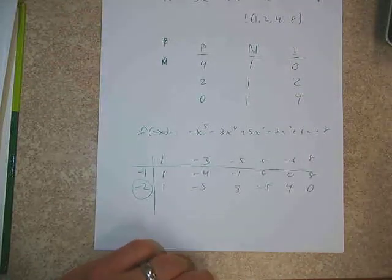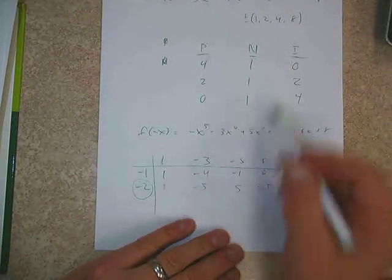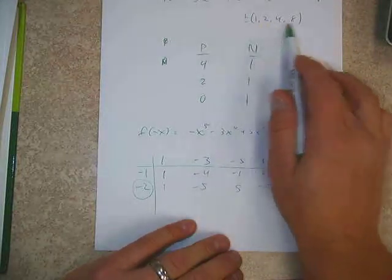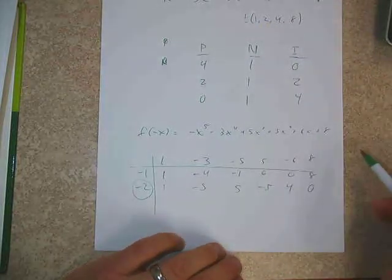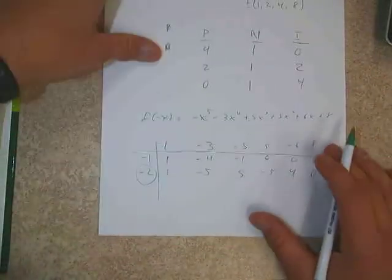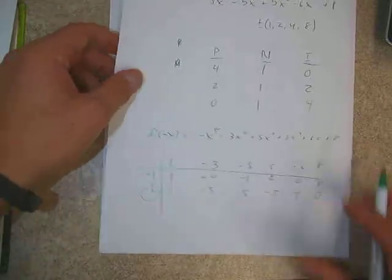Now does that help us know which scenario it is yet? We knew there was going to be one negative root. That means we don't need to check the other negatives — now we can just try 1, 2, 4, or 8.